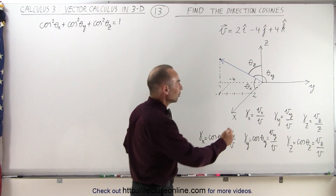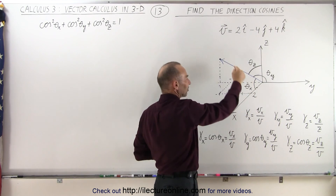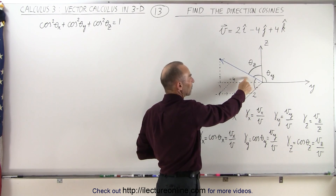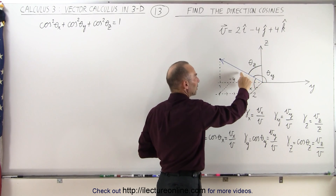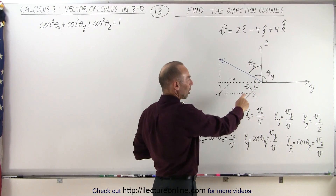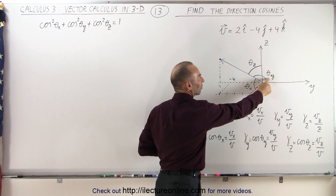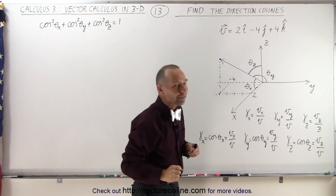You can see that there is an angle between the vector and the x-axis, an angle between the vector and the y-axis, and an angle between the vector and the z-axis. We'll call those theta sub x, theta sub y, and theta sub z.